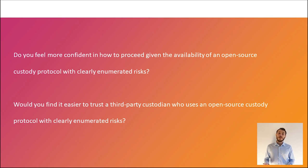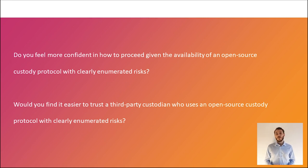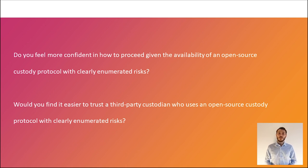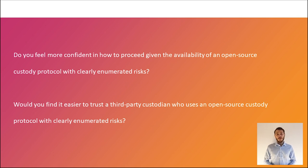As with any model of complex reality, attack trees are imperfect and cannot capture every possible attack pathway. But the alternative — complete ignorance — is not better. Our intention is to utilise open-source community input and gather data from live Revolt deployments to improve the model's accuracy and reduce risks inherent in Bitcoin custody. So, let's return to our initial scenario: you are a Chief Financial Officer who has decided to put Bitcoin on your company's balance sheet. Do you feel more confident in how to proceed given the availability of an open-source custody protocol with clearly enumerated risks? Would you find it easier to trust a third-party custodian who uses an open-source custody protocol with clearly enumerated risks?